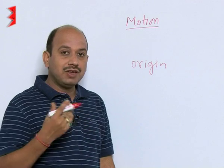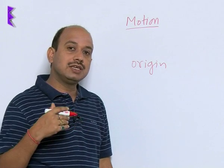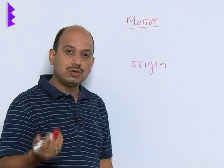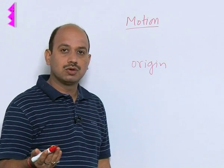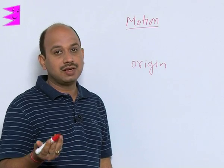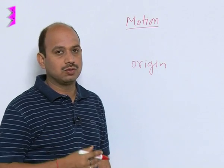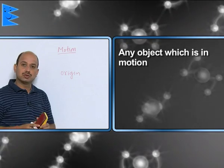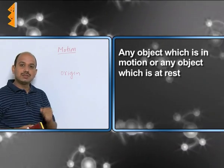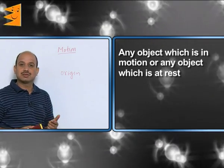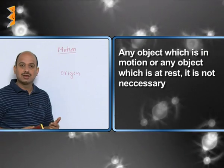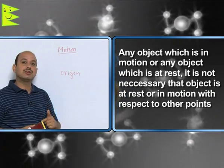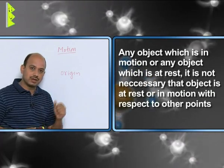Now, when that person is not changing their position with time, and with respect to you as well, then you can say that person is at rest with respect to you. So any object which is in motion or at rest — it is not necessary that the object is at rest or in motion with respect to other reference points.